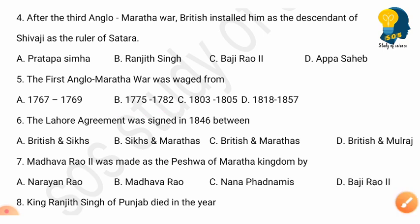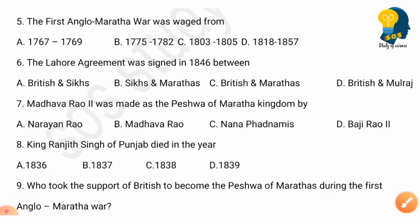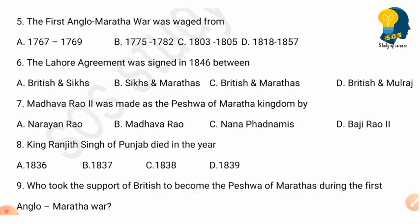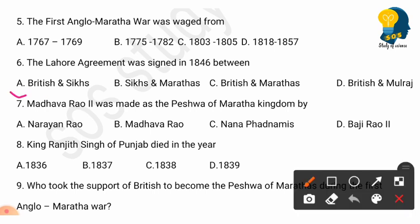Question 6: The Lahore Agreement was signed in 1846 between — options: British and Sikhs, Sikhs and Marathas, British and Marathas, British and Mulraj. The correct answer is option A: between the British and Sikhs. The Lahore Agreement was signed in 1846.